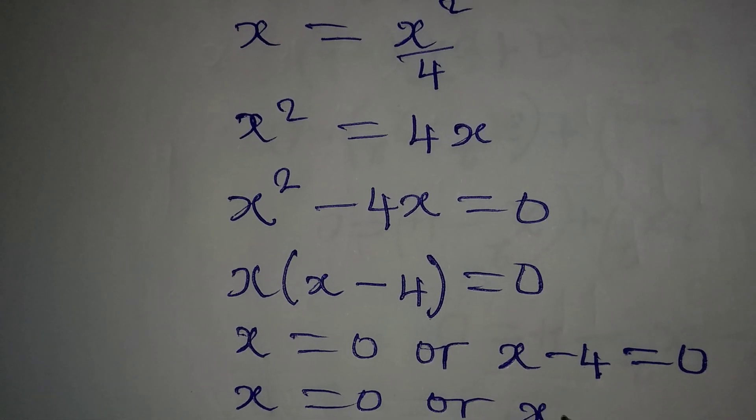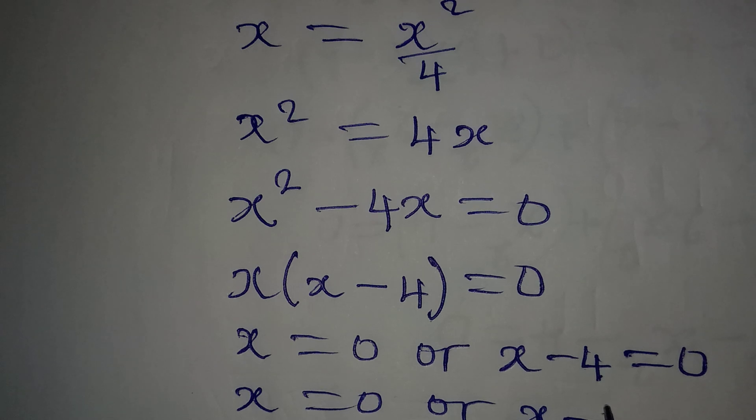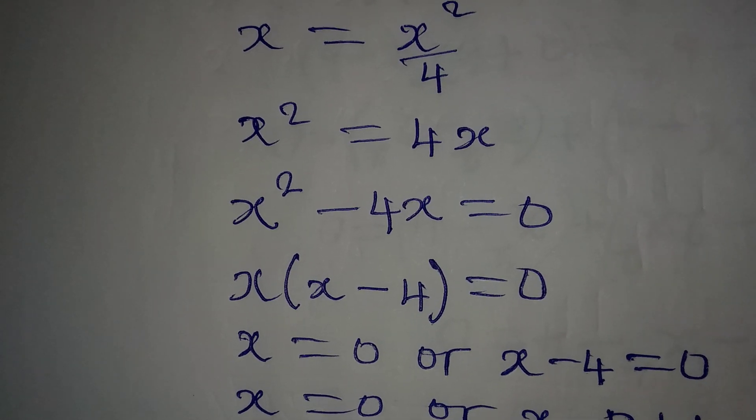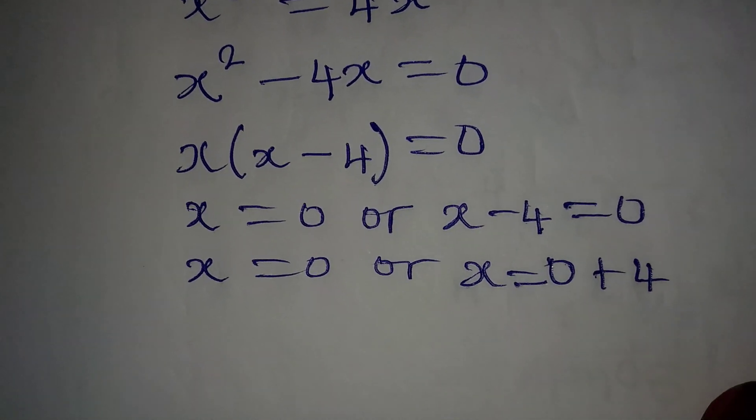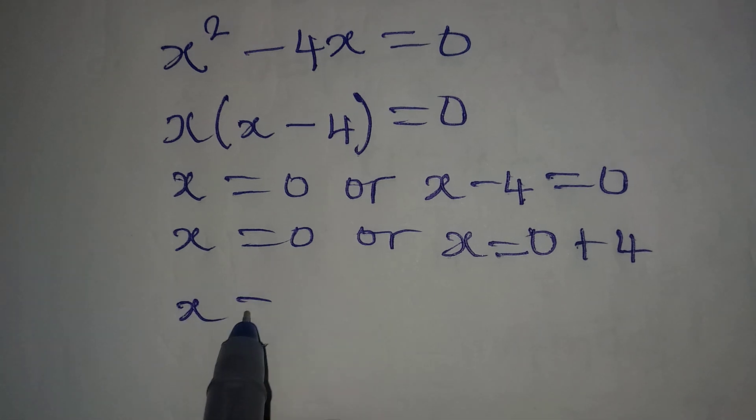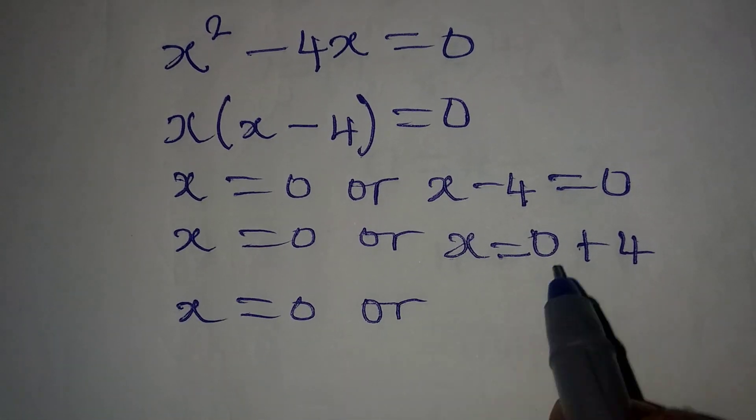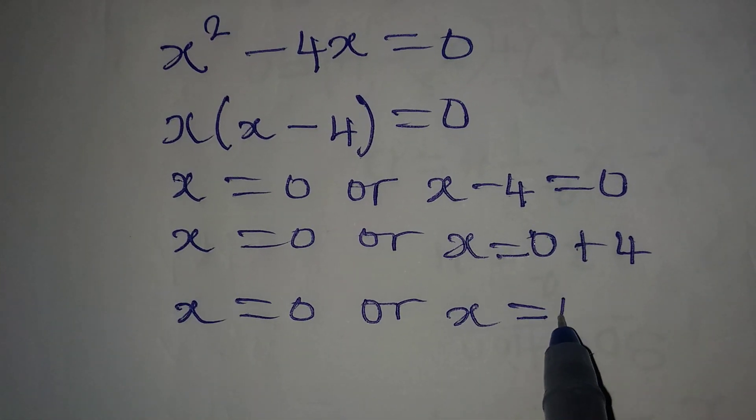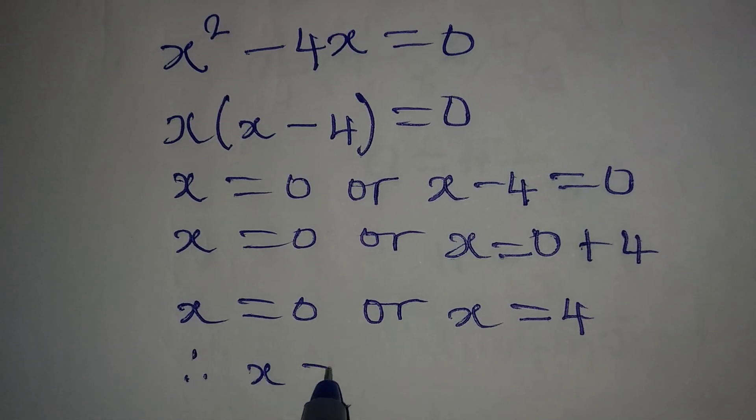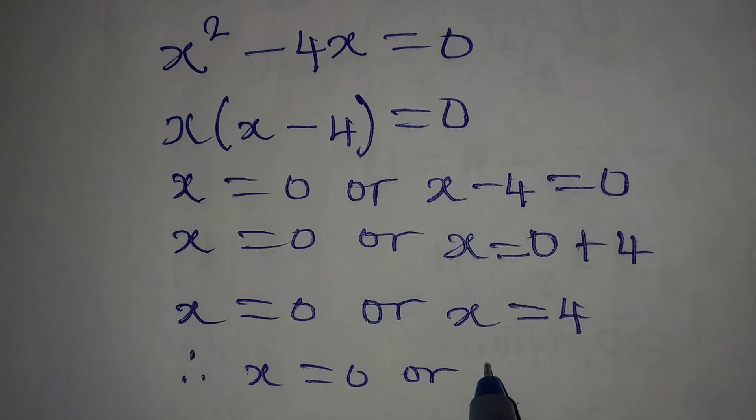x = 0 or x will be equal to 0 + 4. This is what we have. So x remains 0 here or x = 4. Therefore we have x to be 0 or 4.